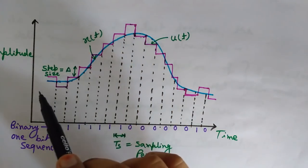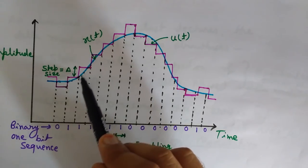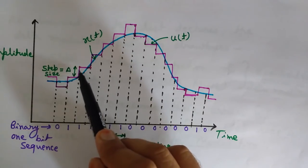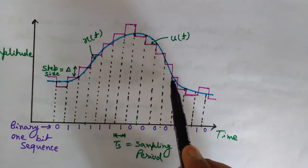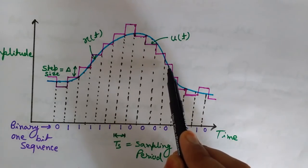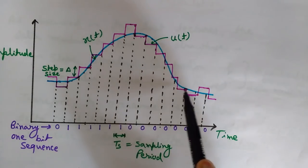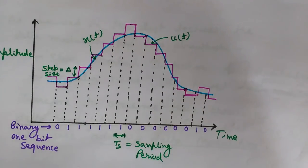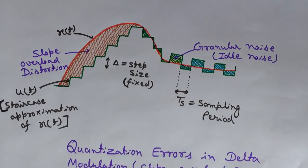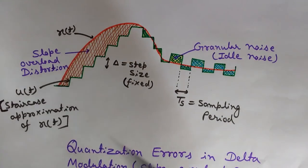If the signal is rising continuously, every time the last approximated value would be smaller than the sampled value, so we keep increasing by delta. When it is decreasing, the last approximated value would always be higher than the next sampled value, so we decrease by one delta. But here the quantization error is significant — two types are observed: slope overload distortion and granular noise, also called idle noise.